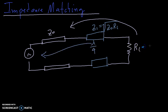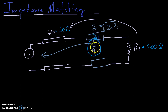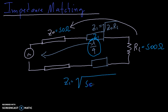So let's suppose that we have a load which is 500 ohms, just a resistive load, and let's suppose that Z0 is equal to 50 ohms. So we want to find the impedance Z1 of this transmission line in order to match the line. So the first step is we calculate Z1, which will be equal to 50 times 500 — this is RL and this here is Z0.